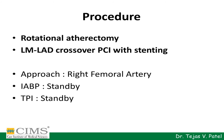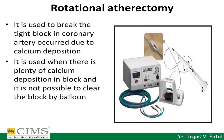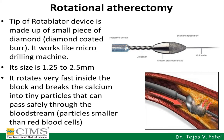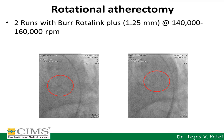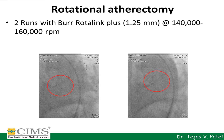Our approach was from the right femoral artery, and we kept IABP as well as temporary pacemaker insertion as standby in case required. Rotational atherectomy is used to break the tight block in the coronary artery caused by calcium deposition. It is used when there is significant calcium deposition and it is not possible to clear the block by balloon. The tip of the rotablator device is made up of a small piece of diamond — it is a diamond-coated bur — which works like a micro-drilling machine. Size ranges from 1.25 to 2.5 mm, and it rotates very fast inside the block, breaking the calcium into tiny particles that can pass safely through the bloodstream, even smaller than red blood cells.